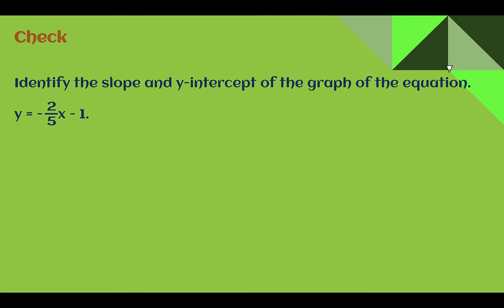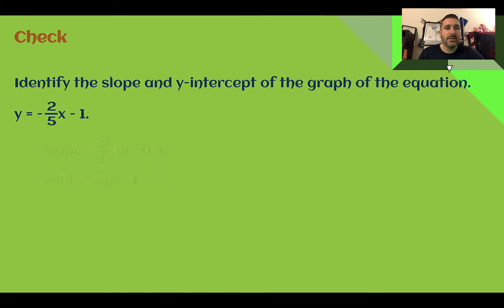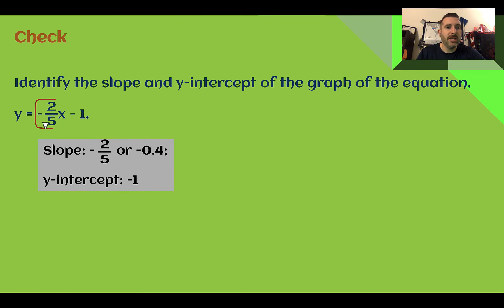Check your understanding: identify the slope and y-intercept from the equation. You should have said the slope was negative two-fifths and the y-intercept was negative one. The slope is your m value and the y-intercept is b — you could write it as plus negative one, or just see the minus one. That is your y-intercept.